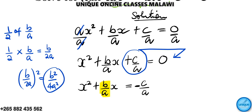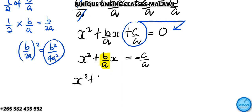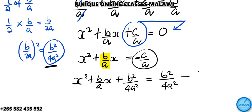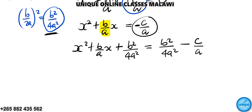So it will be x squared plus b over a x, then plus b squared over 4a squared is equal to, if we go right hand side, b squared over 4a squared minus c over a. The common denominator is 4a squared.